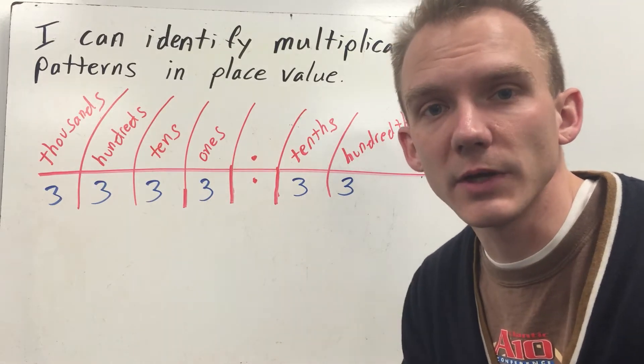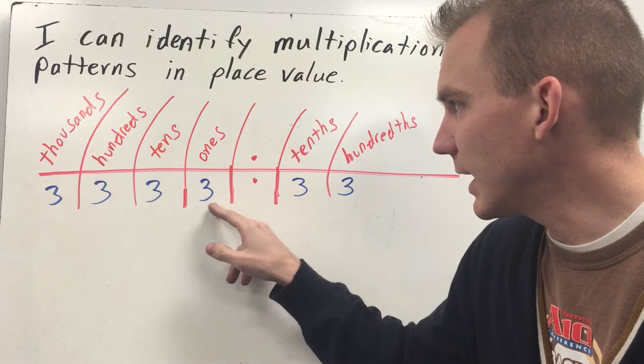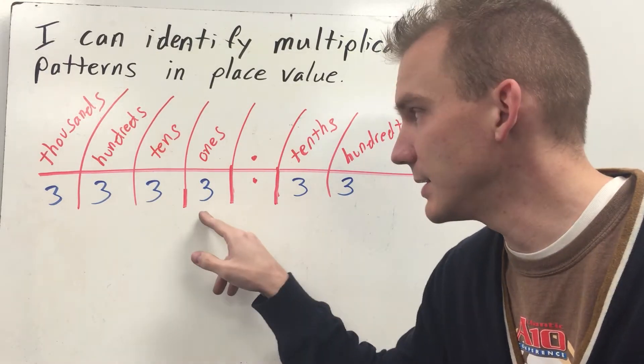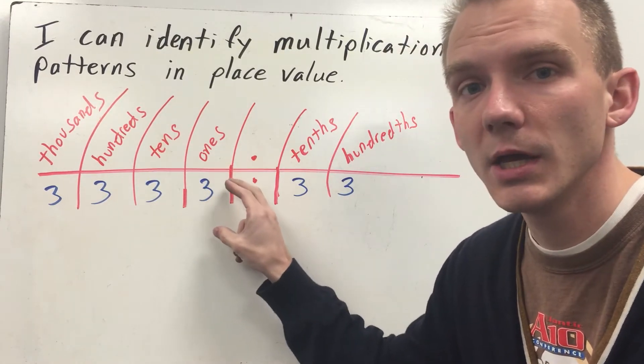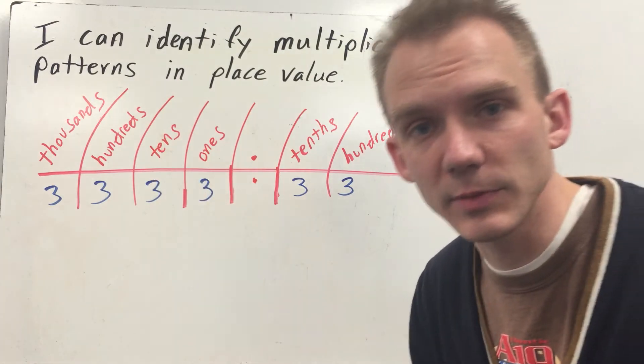Just like each place value when I go one, two, three, four, five, six, seven, eight, nine, ten, I now have one ten and zero ones. Once you hit ten in a given place value, you have increased the next place value.